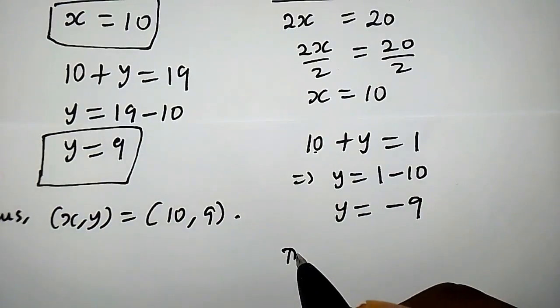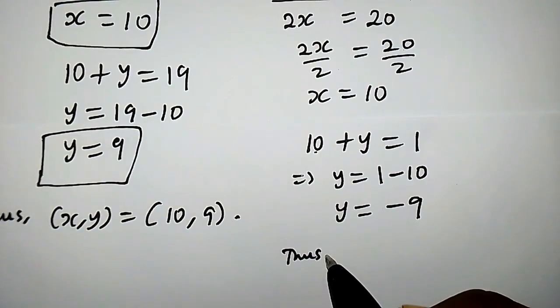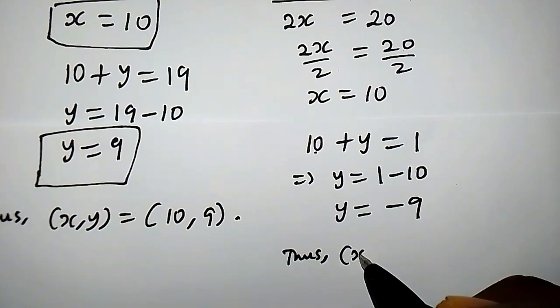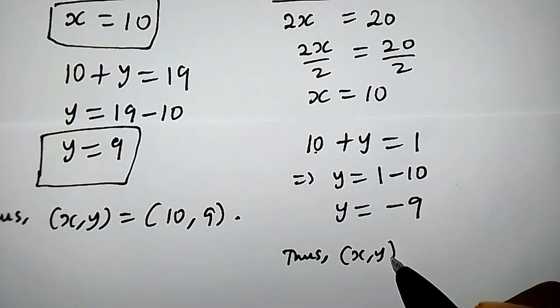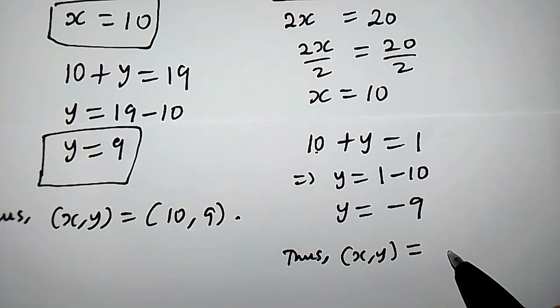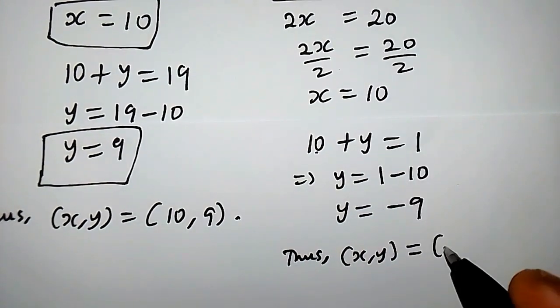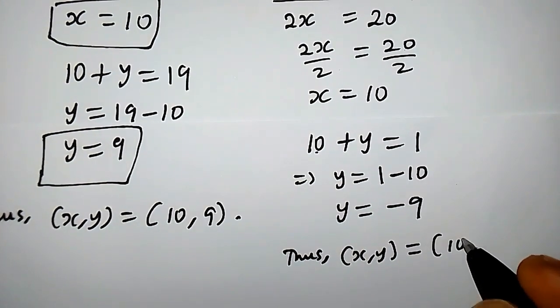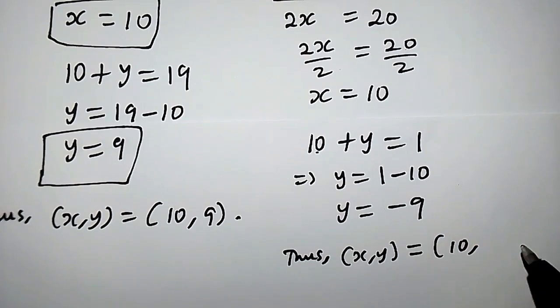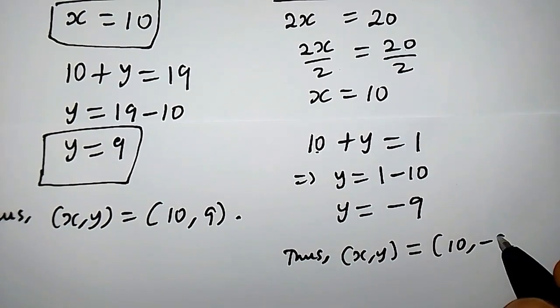The second solution is x comma y equals (10, negative 9).